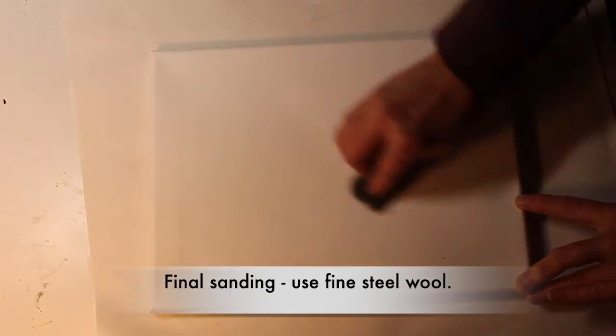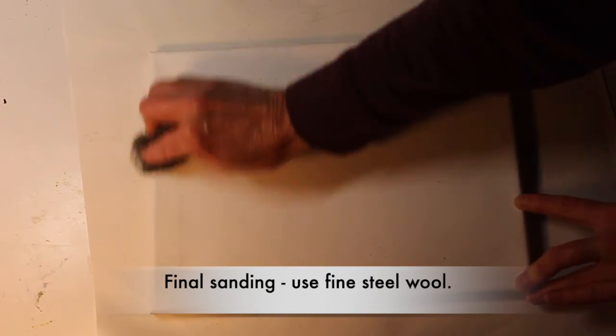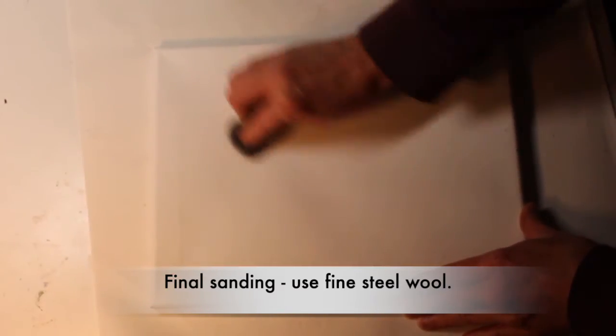On your final sanding you're going to use a fine, fine steel wool and just go over the surface carefully. You don't want to press too hard but you do want to make sure that you are leaving a very smooth surface behind.